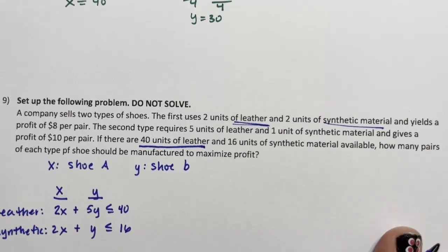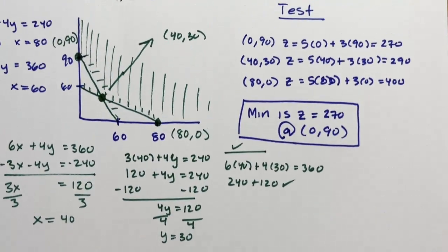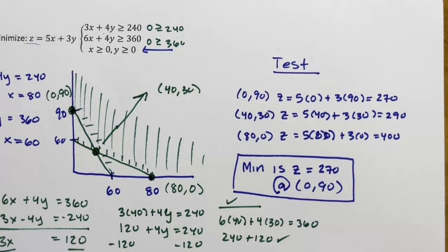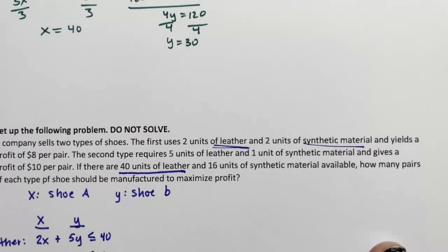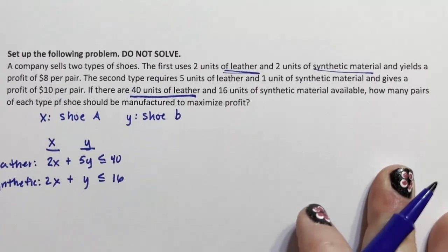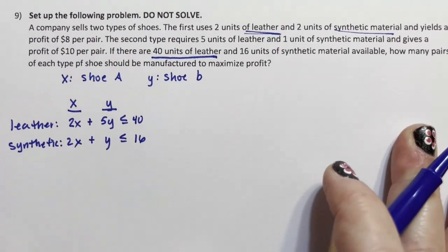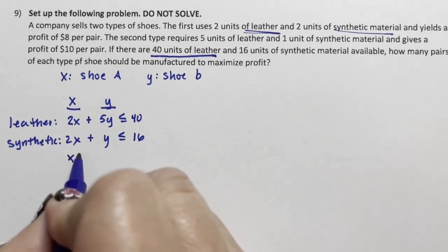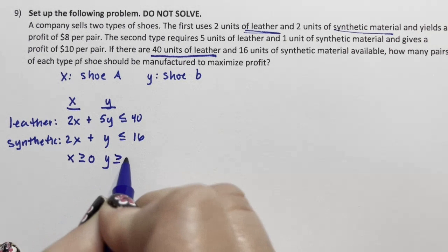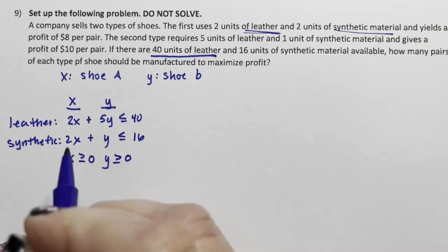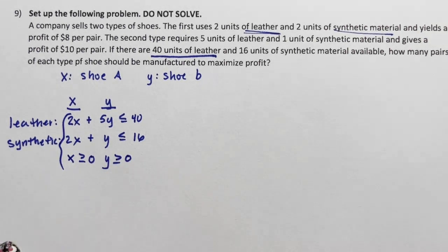But if you remember up here, we were in the first quadrant because x and y are greater than or equal to zero. And that's really important because you can't have negative amounts of items. So we need to add that here. Those are our logicals. Logically, x has to be greater than or equal to zero and y has to be greater than or equal to zero. That's really important to add into your list of equations.